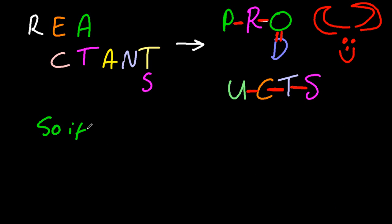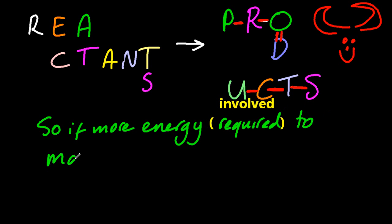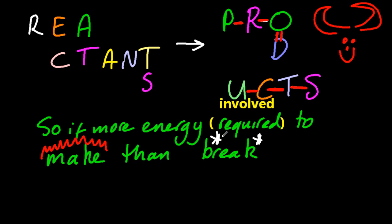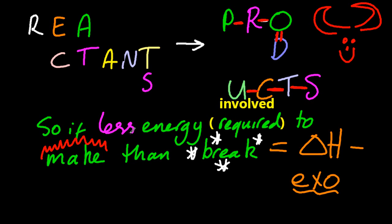So if more energy is involved to make bonds than break bonds, and don't forget, making releases heat and breaking absorbs heat so it feels cold, then overall for the reaction, delta H is negative. It's going to be exothermic because there's more energy involved with releasing energy than taking it in. And the contrary is true. If there's less energy, then it's going to be endothermic. Less energy required to make than break, it's going to be endothermic, it's going to feel cold.